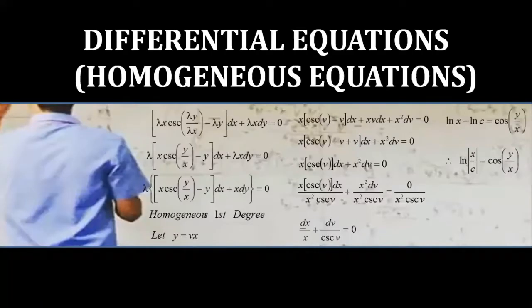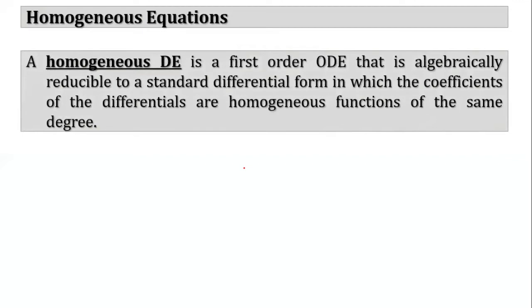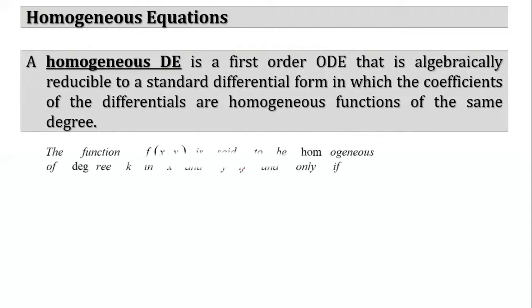Here's another video on differential equations, this installment of my lecture series for the course. We're going to talk about homogeneous equations. A homogeneous differential equation is a first-order ordinary differential equation that is algebraically reducible to standard differential form in which the coefficients of the differentials are homogeneous functions of the same degree. The function f(x,y) is said to be homogeneous of degree k if and only if when you replace x by λx and y by λy, you get λ^k times f(x,y), where k is the degree.